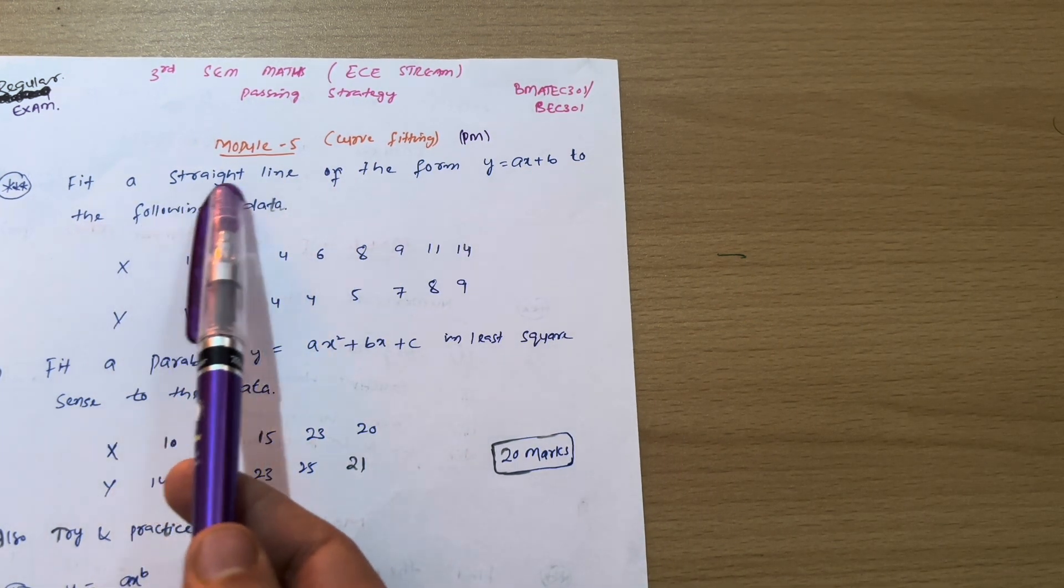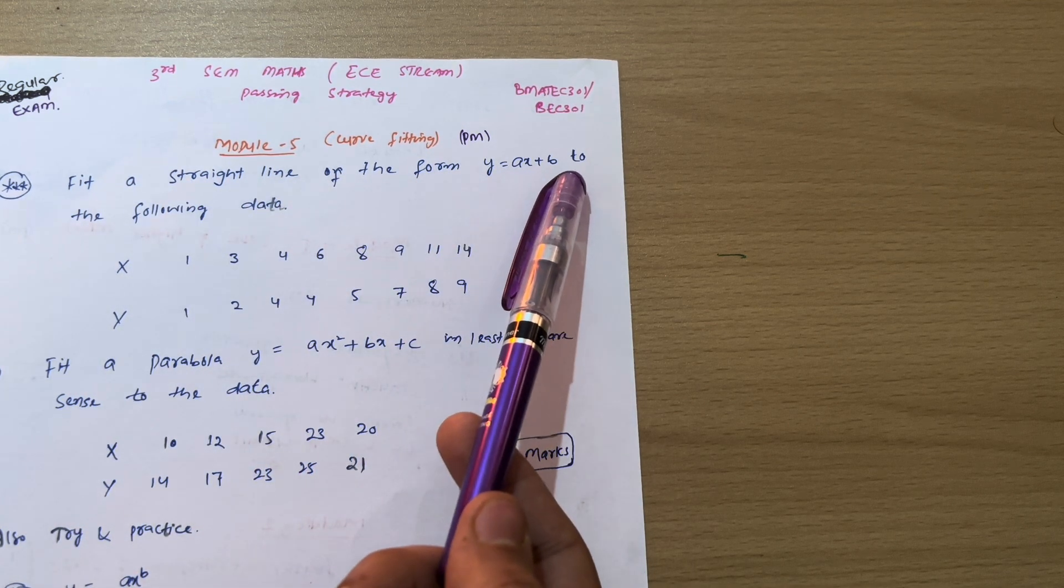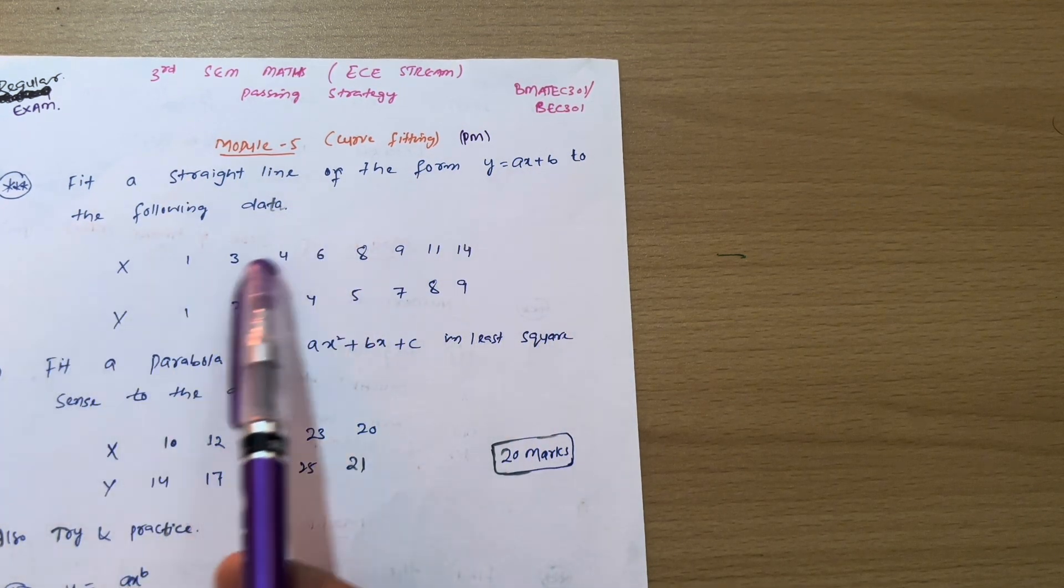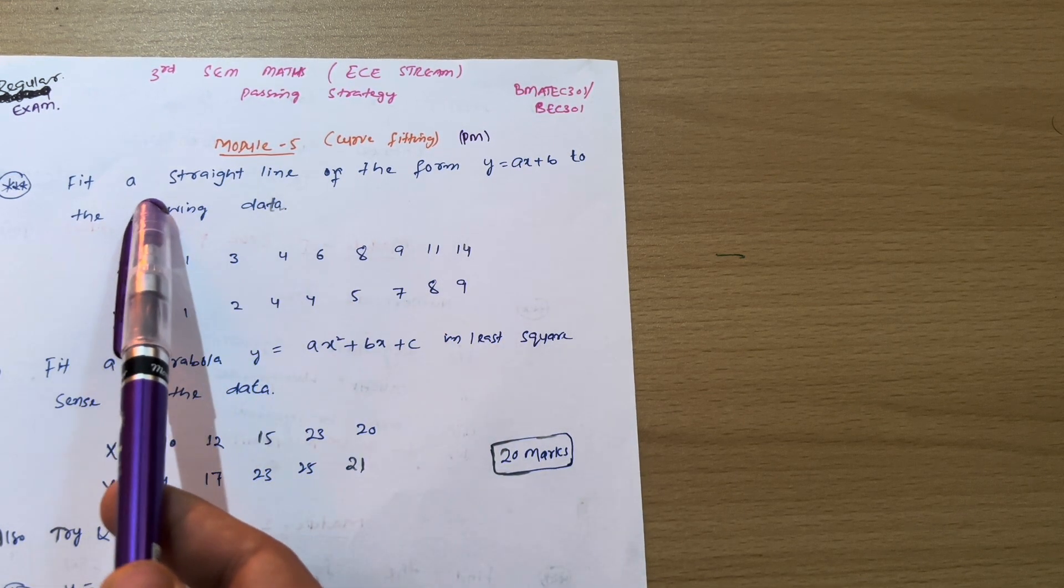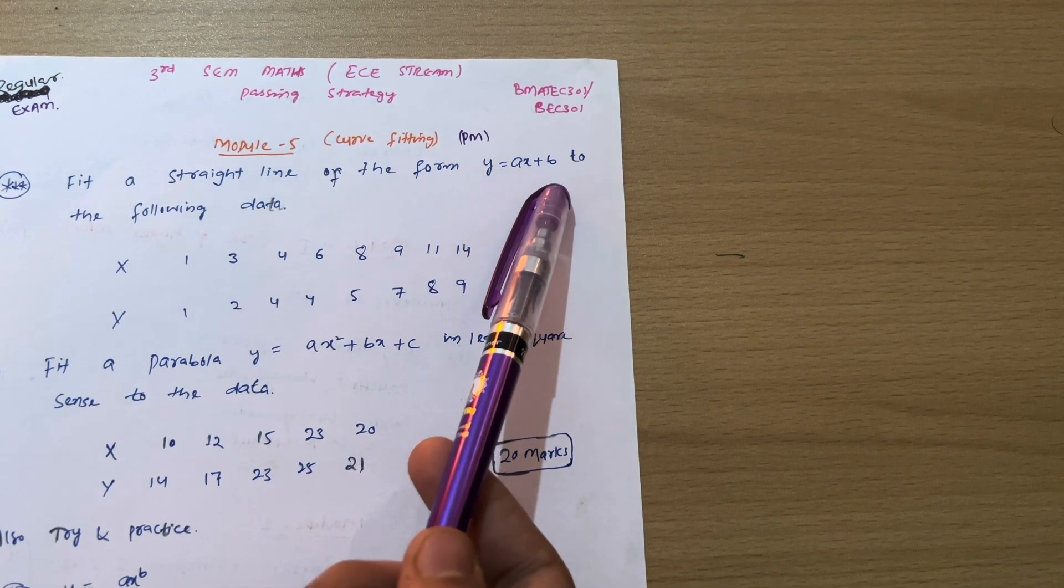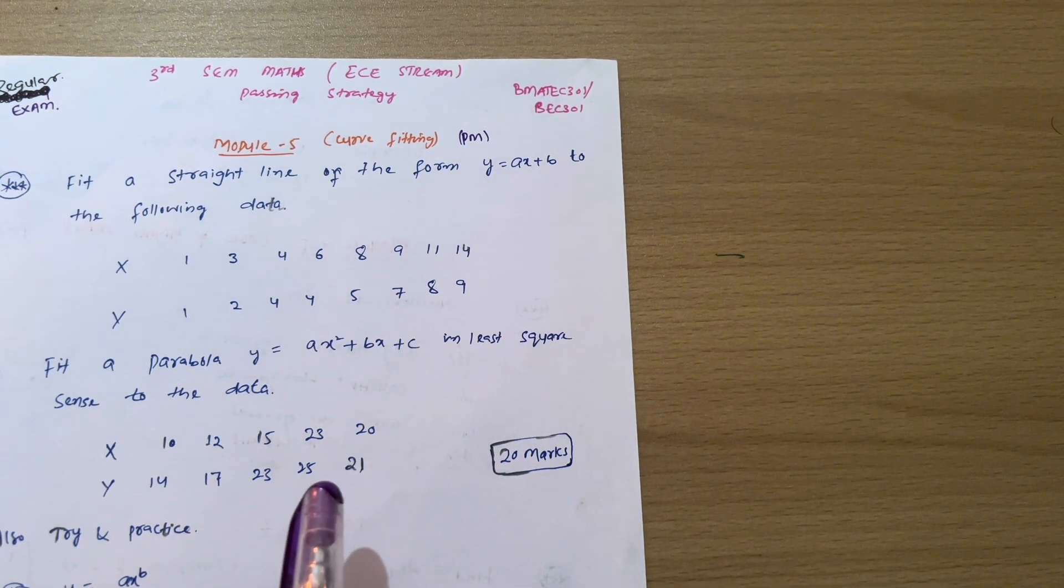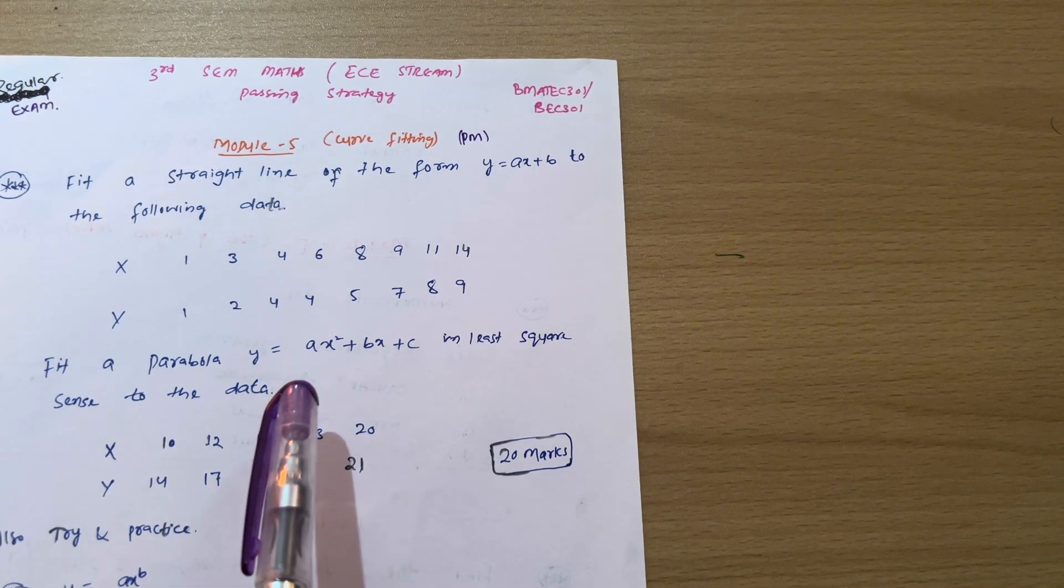First of all, we have a straight line concept. Fit a straight line of the form y equals ax plus b to the following data. So data will be given like this one. X values will be given, y values will be given. What you have to do, you have to form a straight line equation in the form y equals ax plus b. Also, I have solved these varieties of problems. You can go through my playlist. Problem solving videos are available.